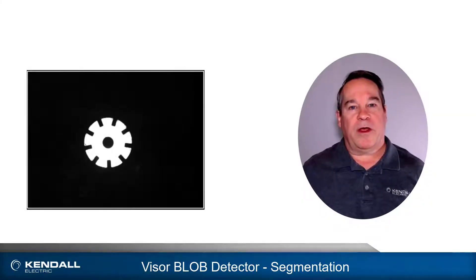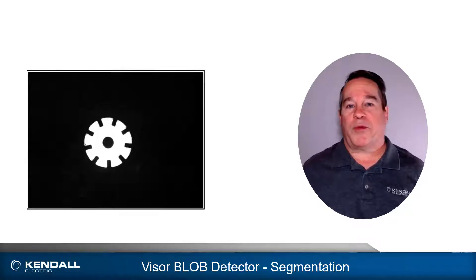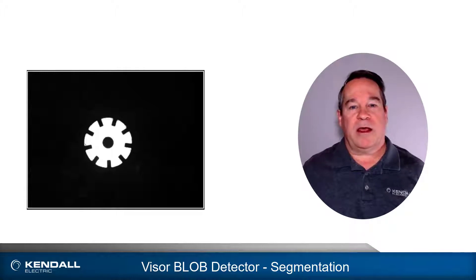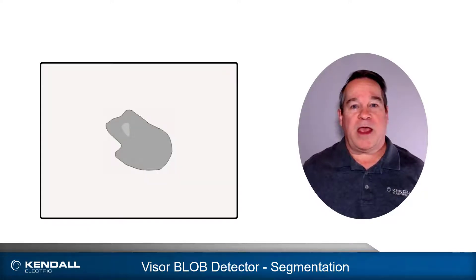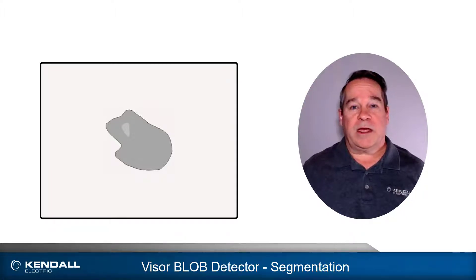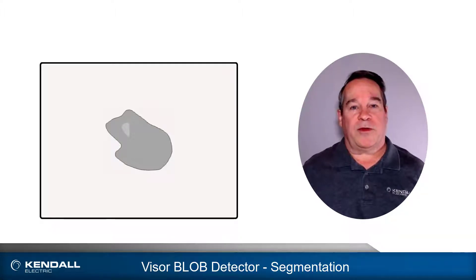A common application for a machine vision inspection is detection of the presence of an object. If the shape of the object is consistent and well defined, a pattern matching or contour detector would be a good choice. Conversely, if the object is not a defined shape or size, a blob detector may work well. This detector has two significant aspects: the first is segmentation and the other is analysis.